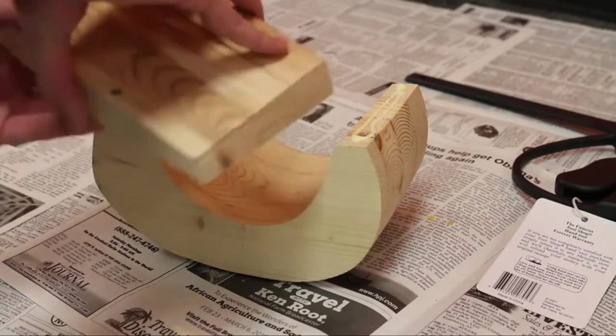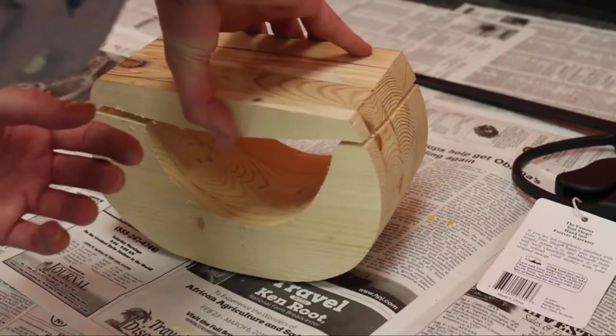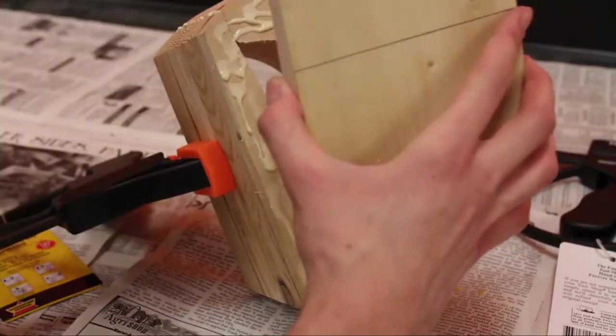After that, glue the other components of your bandsaw box together. Clamp them and leave them to dry separately from the inside drawer piece.